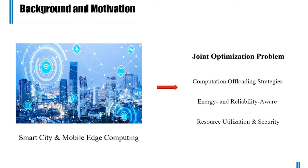In recent years, with the continuous improvement of city intelligence and the continuous upgrading of mobile devices, the types of applications show a diversification trend. At the same time, the requirements of mobile users are also becoming more and more widespread. According to a study by the Cisco Visual Networking Index, the global network traffic will grow nearly seven-fold from 2017 to 2022, to around 77 exabytes per month, which will undoubtedly be a major challenge in the future. Benefiting from the development of various cloud technologies and the Internet of Things, a new concept called Smart City has come into existence.